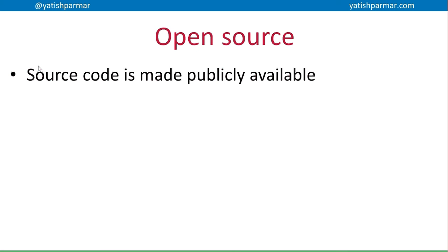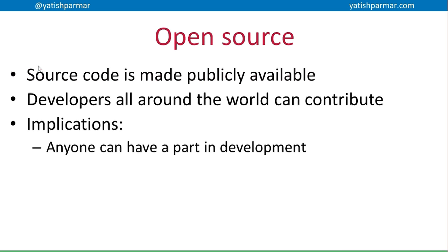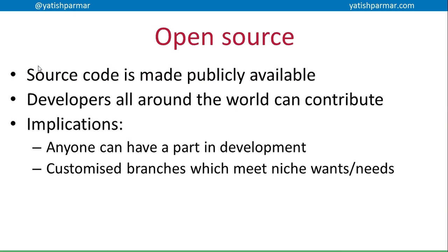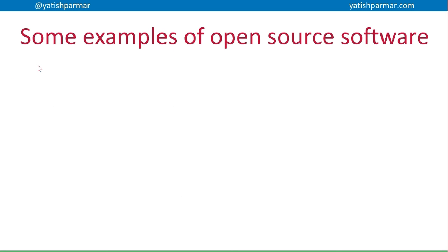With open source software, you can actually see the source code — it's made publicly available. People are free to download the code, change it, contribute to it, or fork the application to create a niche version that meets their needs. The implications are that anyone can have a part in development, customized branches exist to meet niche needs, and debugging and fixes are often completed faster and sometimes more creatively. Open source software is also often free for the end user.